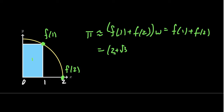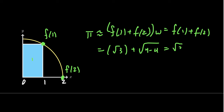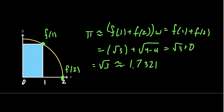f(1) = √3, and f(2) = √(4 − 4) = √0 = 0. So our estimate is √3 ≈ 1.7321. This is an underestimate — not the best estimate, but if you think π is 17 million, 1.7 is relatively close.